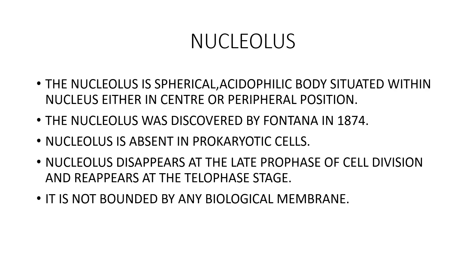Prokaryotic cells do not contain a nucleolus or Kendrika. Nucleolus disappears at the late prophase stage of cell division and reappears at telophase. Another important character of the nucleolus is that it is not bounded by any biological membrane. The nucleolus is associated with the Nucleolar Organizer Region (NOR), which represents the secondary constriction of the Nucleolar Organizer chromosome.